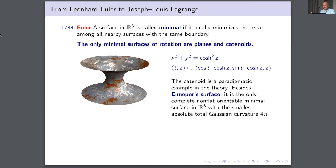Euler showed in particular that the catenoid, which you see here — a curve that is the graph of the hyperbolic cosine rotated in space — is a minimal surface, and he also showed that if you rotate any other curve, you don't get a minimal surface. Of course, you can put some parameters; there is a one-parameter family of them.